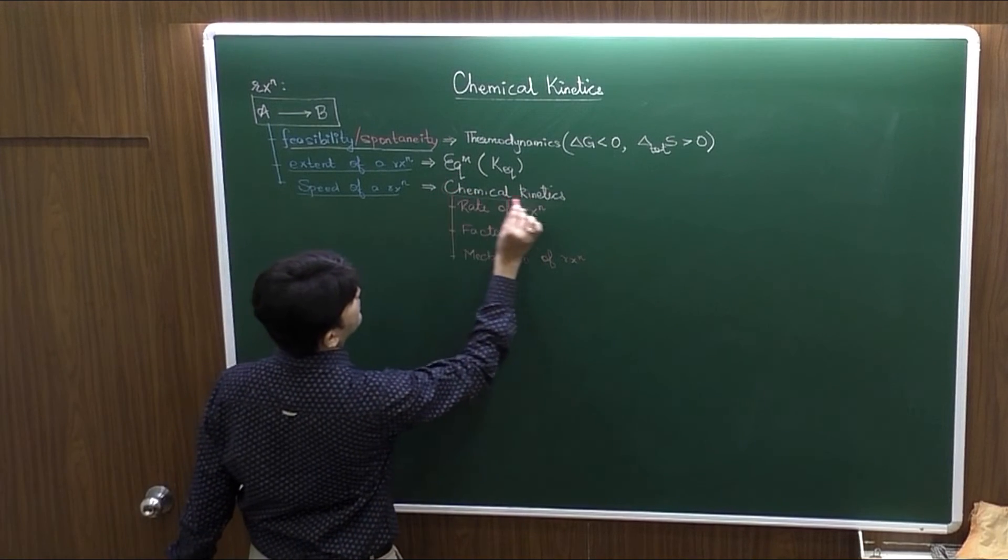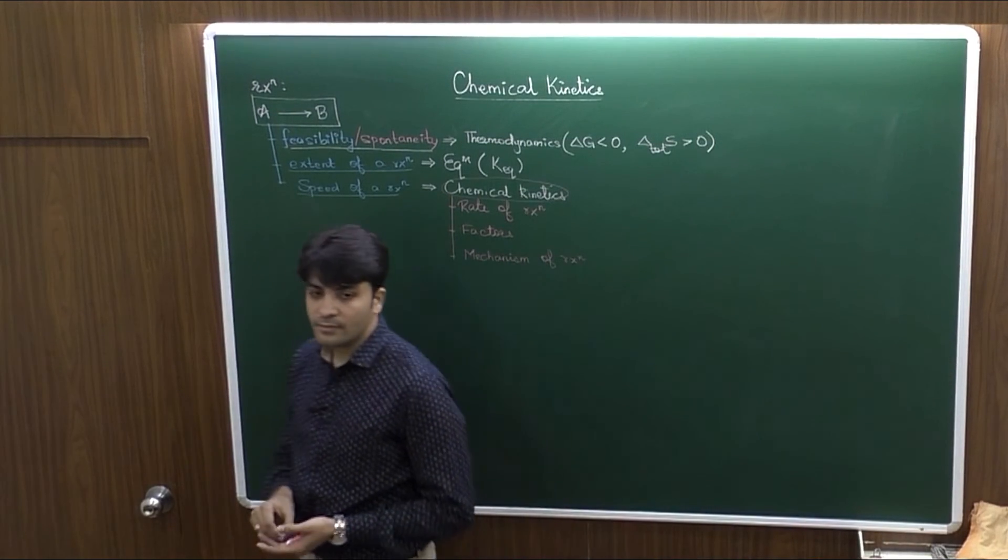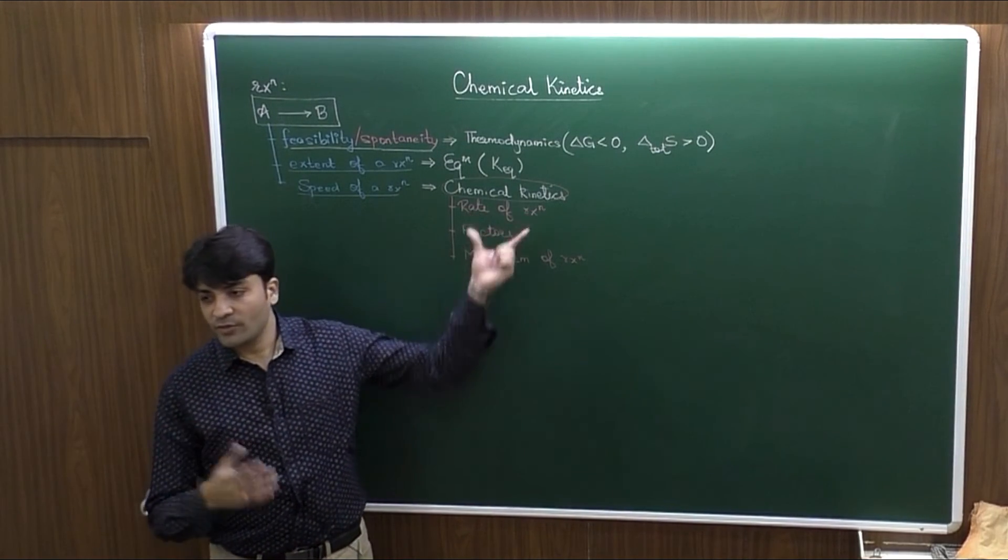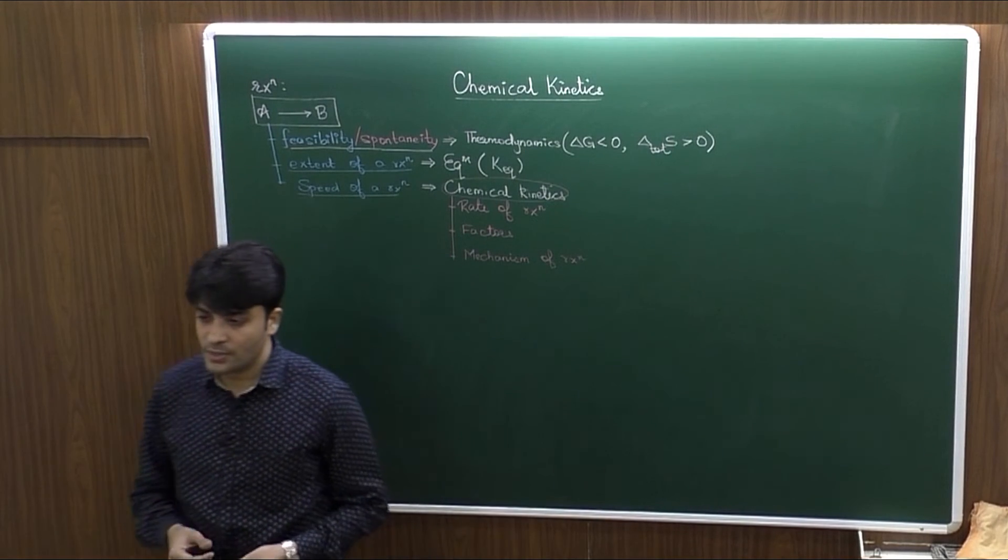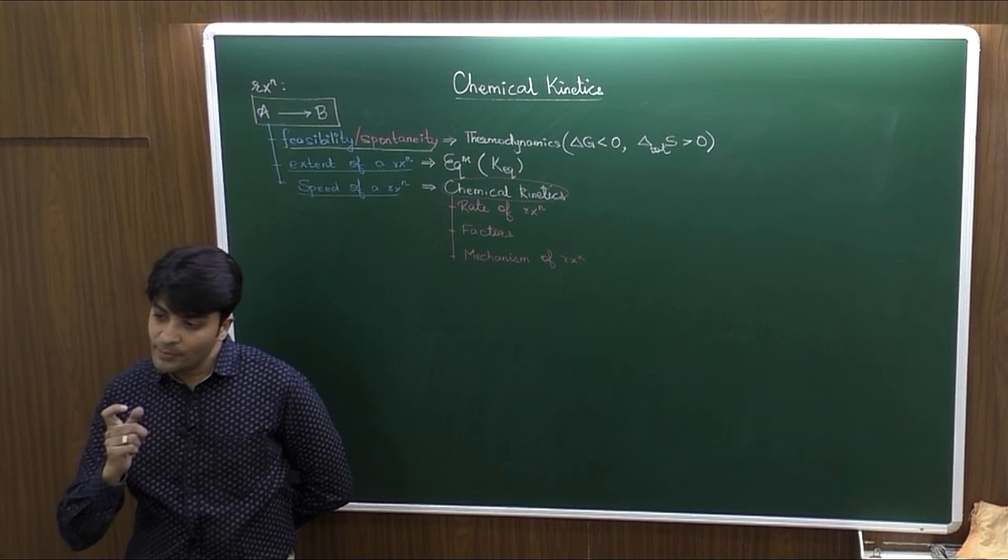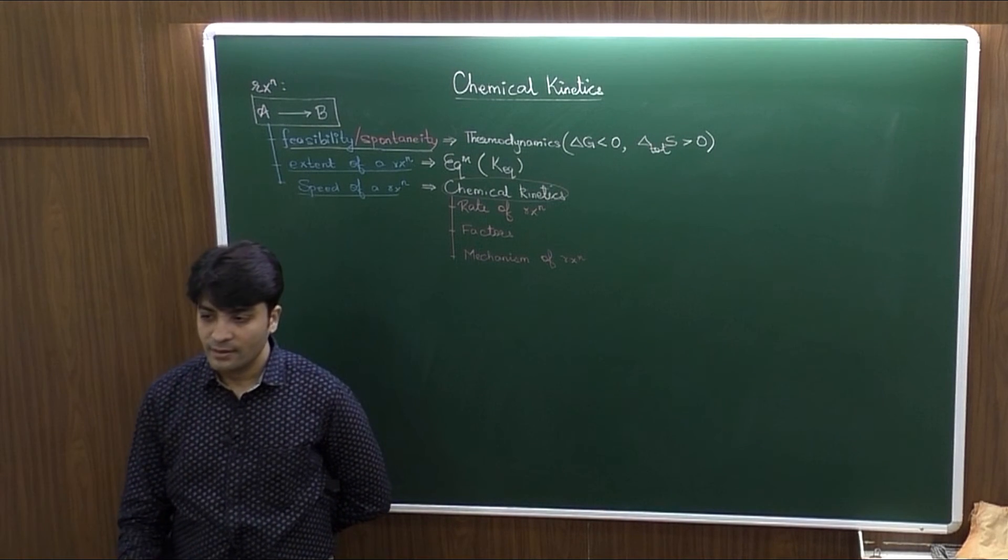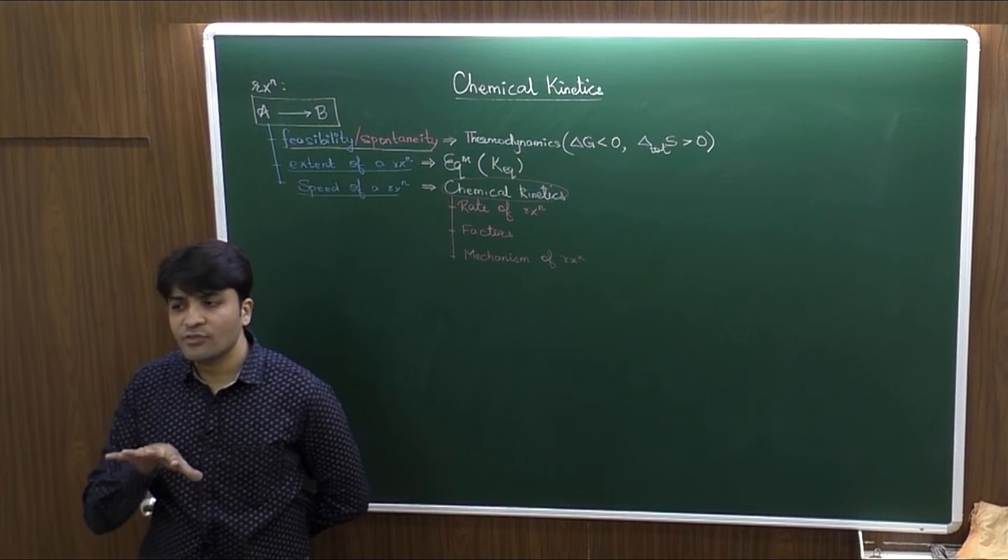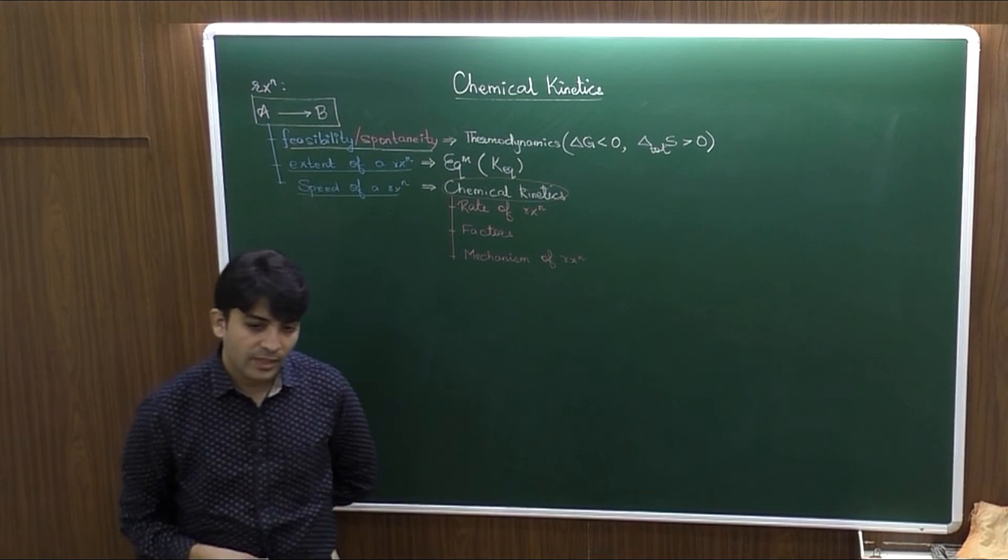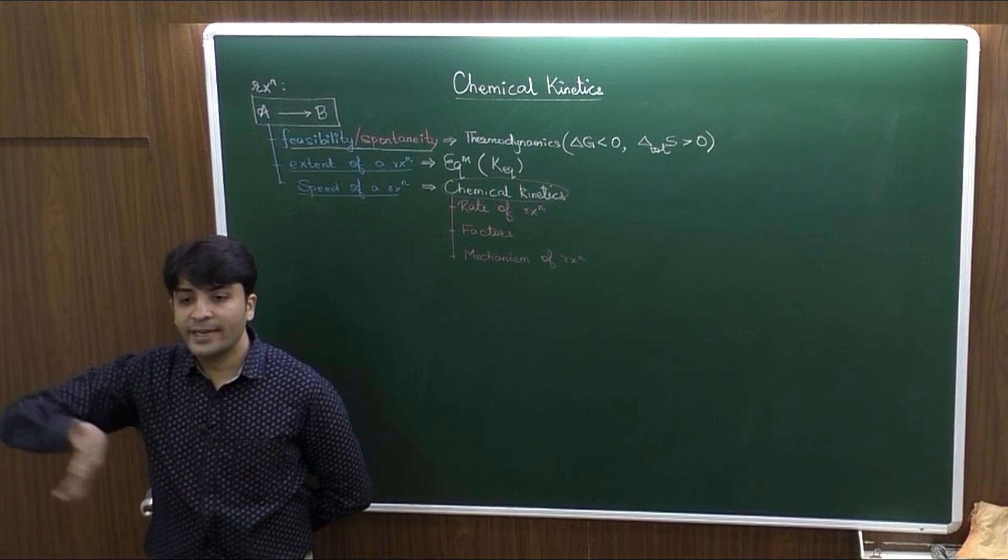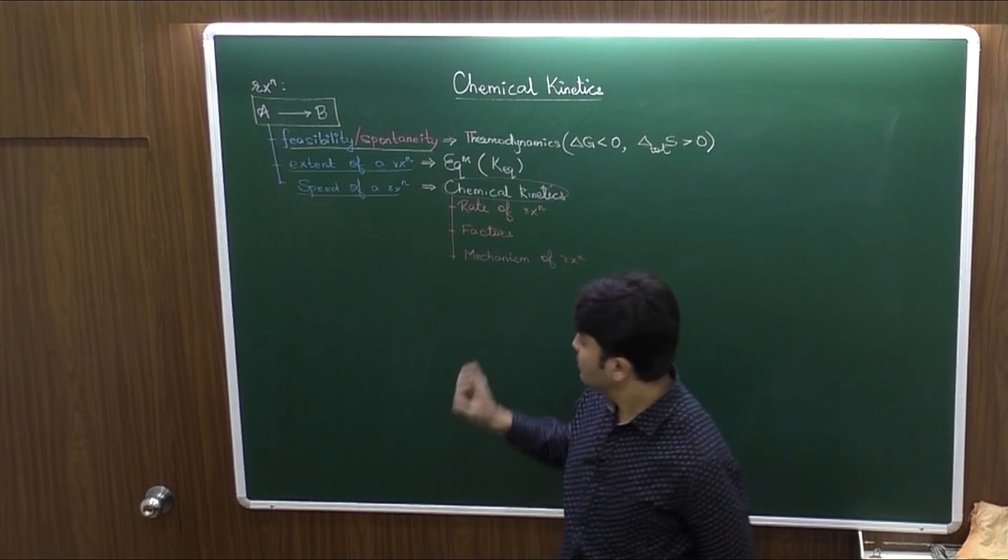Now, why we are studying chemical kinetics? What is the importance? To analyze speed of a reaction. Various industries work on the manufacturing concept, and the manufacturing internally is related with some chemical reaction happening. If that internal reaction is very slow, the production rate also will be very slow. Ultimately, it will affect the profitability of the company. If by some manner the rate of the reaction is increased, it will increase the production. It will increase the profitability. That entirely works at the base of chemical kinetics.